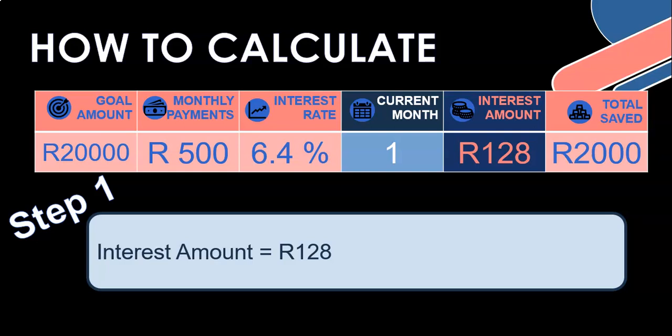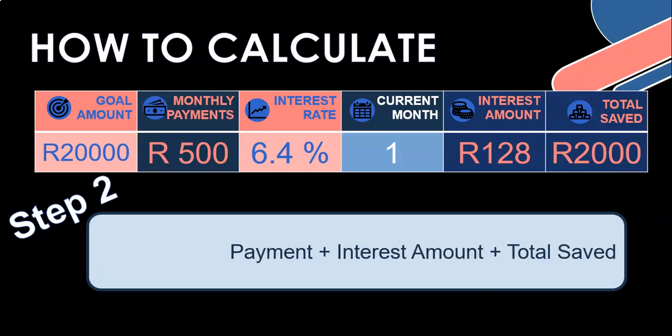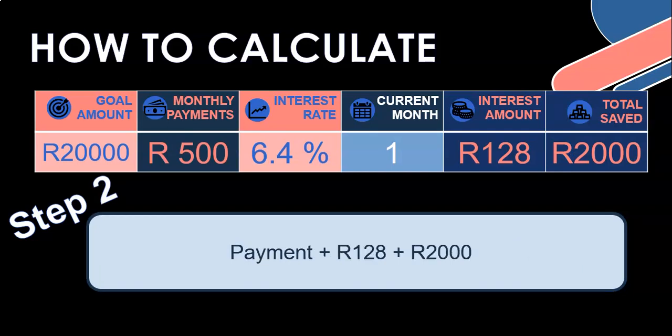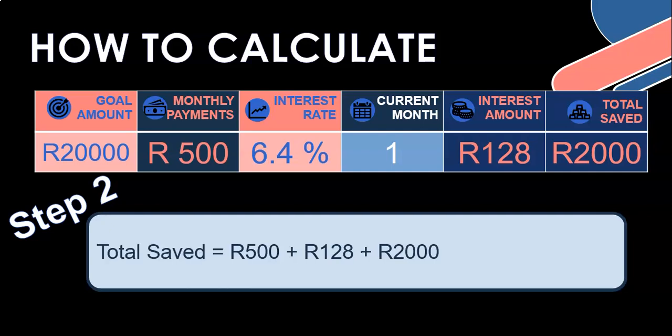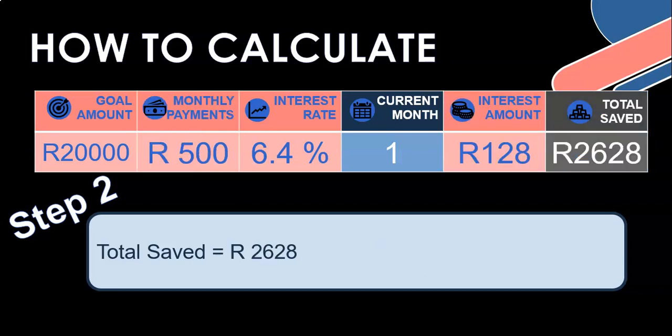At the end of that month, I'm going to take all three values and add them together: my 2,000 Rand currently in the bank account, plus the interest I've just calculated (128), plus the 500 monthly payment. That gives us 2,628. I'm putting it back into total saved because total saved must keep changing. So it now changes to 2,628 - that's how much money is in the bank account after month one, after interest is calculated and the monthly payment is added.